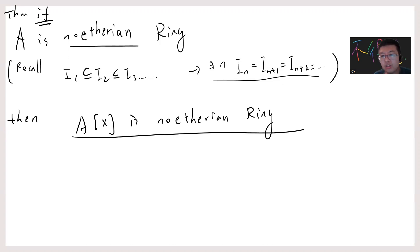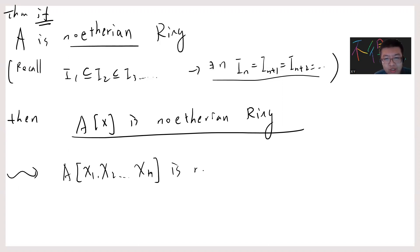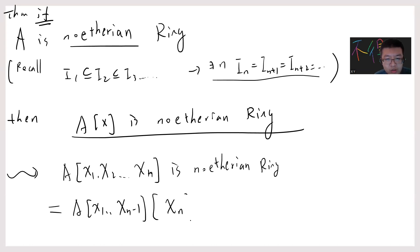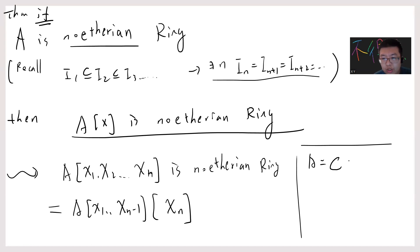This is the Hilbert Basis Theorem. One can easily see that if you do this, then A[x₁, x₂, ..., xₙ] is also a Noetherian ring. The reason is very simple, because this is just A[x₁, ..., xₙ₋₁] with the final variable added. So this polynomial ring is Noetherian. In algebraic geometry, we usually take A to be ℂ, or basically k, which is some algebraically closed field. Obviously, if k is an algebraically closed field, since it's a field, a field must be Noetherian, because the only proper ideal in the field is just zero and itself.